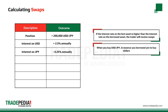To calculate the swaps, we simply multiply the traded amount by the difference in the interest rates. For the above long position of $200,000, the trader will earn $12.32 every day.